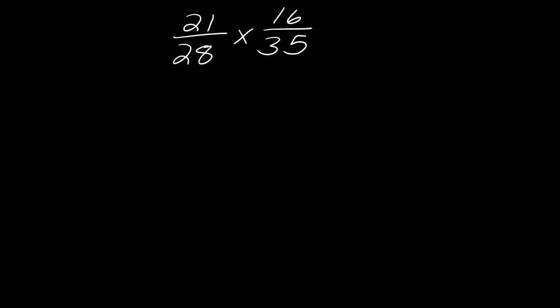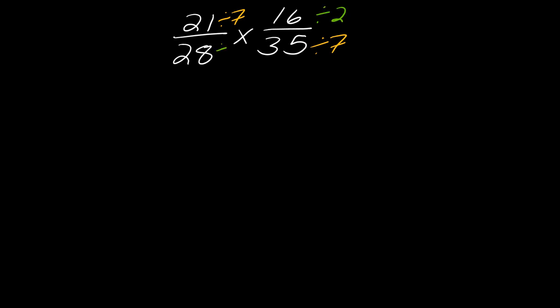Let's look at another one. I notice 21 and 35 are both divisible by 7, and 28 and 16 are both divisible by 4. But what if you only noticed they were divisible by 2? Let's say that's what pops out to you — I want to show you what happens in that case. Dividing 28 and 16 by 2 gives 14 and 8.